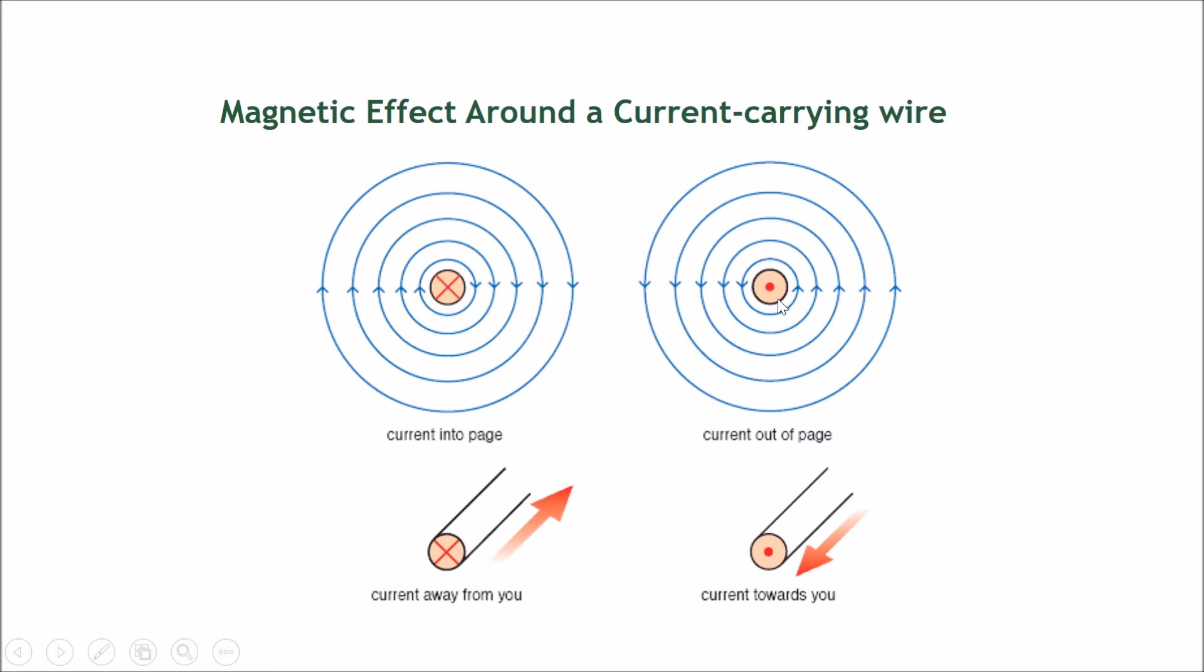This is denoted by a cross and a circle. Now, let's go to the other side. This one here is a circle and a dot. Now this denotes that the wire is going through the page again, but for this one, the current is coming from behind the page and coming out to you. Imagine this over here as looking at the tip of an arrow. So this is what you will see.